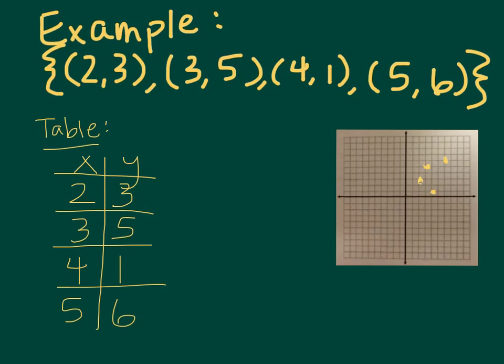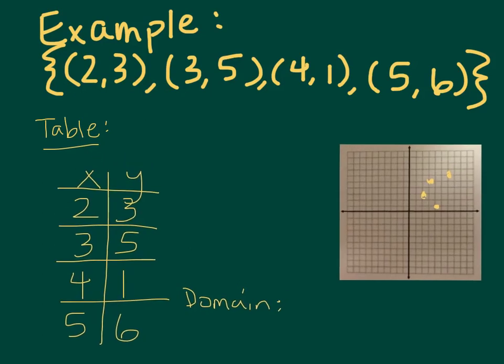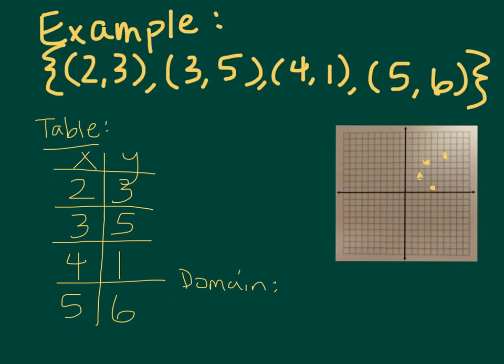If I was going to determine the domain here, I would say that my domain is 2, 3, 4, and 5. And then I could say that my range would be 3, 5, 1, and 6. Thanks.